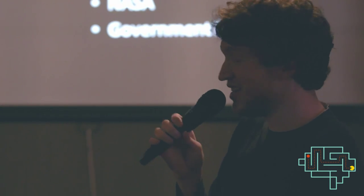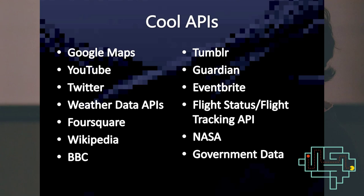Cool APIs that exist in the world: Google Maps, YouTube, Twitter — that's always a staple. Weather data APIs, Foursquare, Wikipedia, BBC. If you wanted to make a game — has anyone played The Republic Times by Lucas Pope? You're the editor of a newspaper, you drag in articles, and depending on what articles you put in it affects how people view the state — you can incite rebellion or make them more subservient. It would be cool to get actual real-time articles and make something out of that.